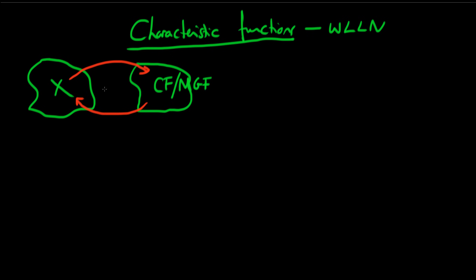So why can we do this? Well, the idea is that for every different random variable — whether it be Poisson, normal, or binomial — each type of random variable has its own unique characteristic function.